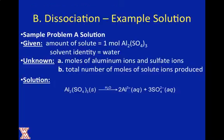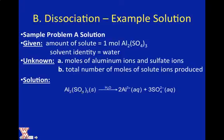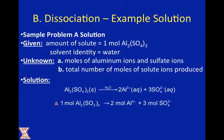The first thing we have to do is write a dissociation equation. We have aluminum sulfate solid dissolving in water to produce two moles of aqueous aluminum ions plus three moles of aqueous sulfate. The three comes from the subscript for sulfate, and the two comes from the subscript for aluminum.